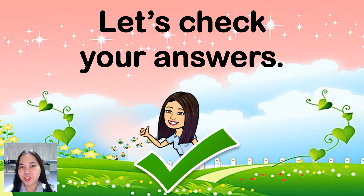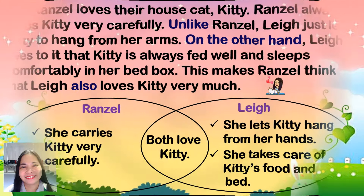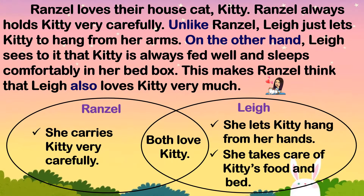Let's check your answers. On the other hand, they both love Kitty. And these are their differences. Ronzel carries Kitty very carefully. On the other hand, Lei lets Kitty hang from her hands, and she takes care of Kitty's food and bed.